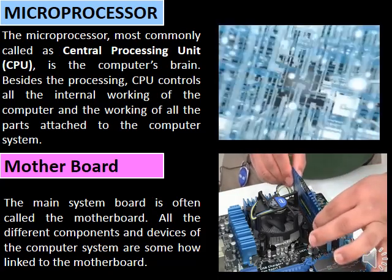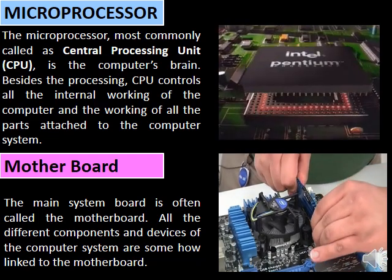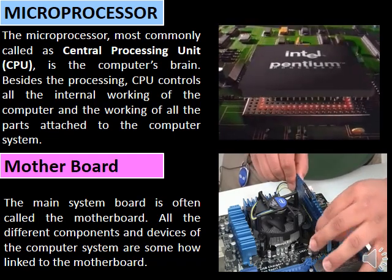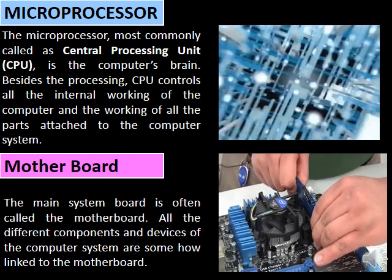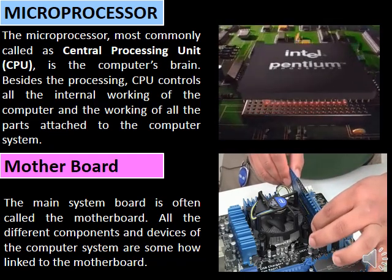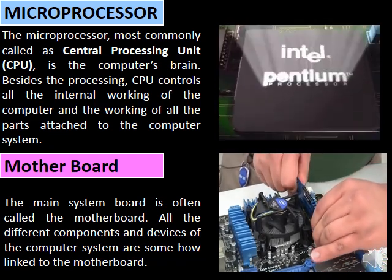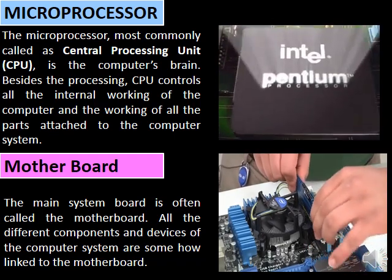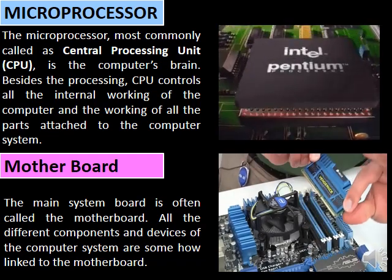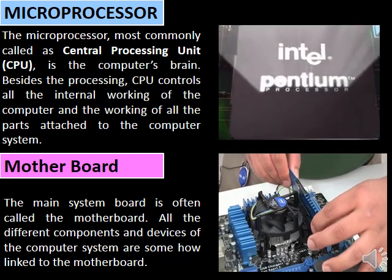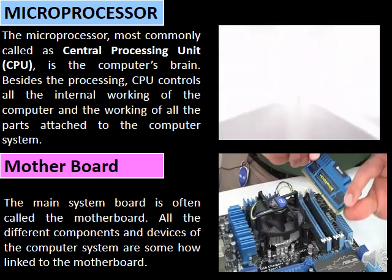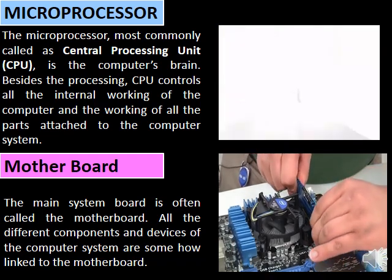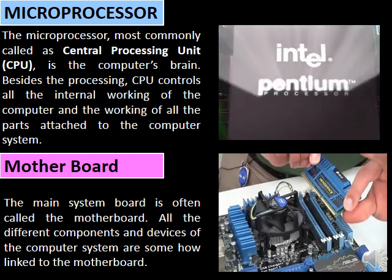The microprocessor, most commonly called the central processing unit or CPU, is the computer's brain. Besides processing, the CPU controls all the internal working of the computer and the working of all the parts attached to the computer system. The main system board is often called the motherboard. All the different components and devices of the computer system are somehow linked to the motherboard.